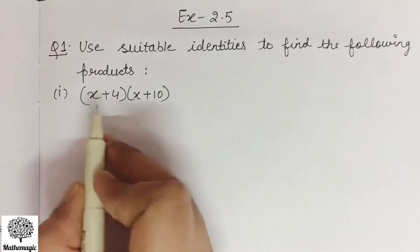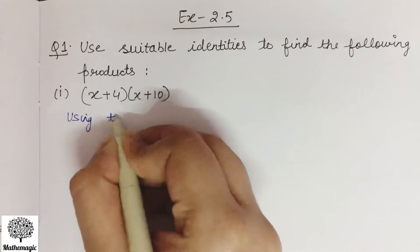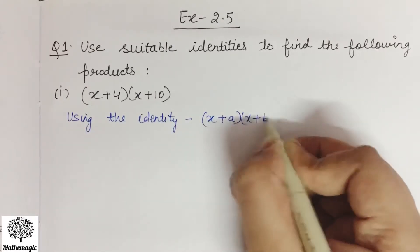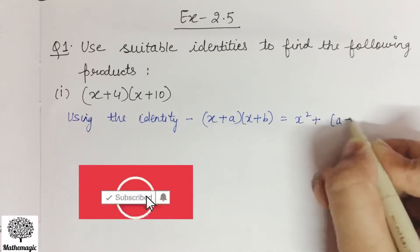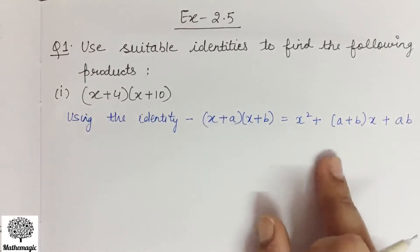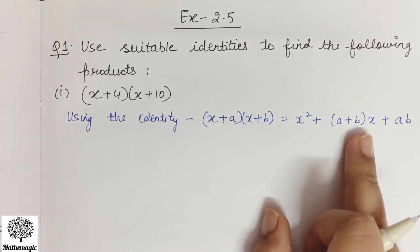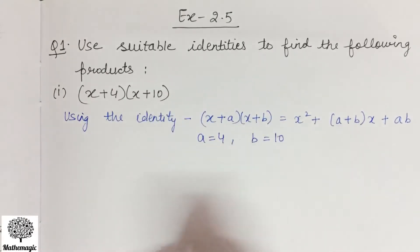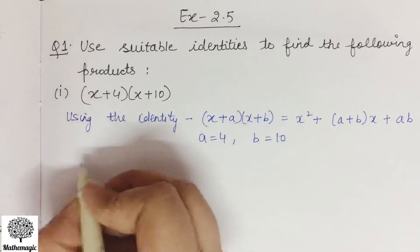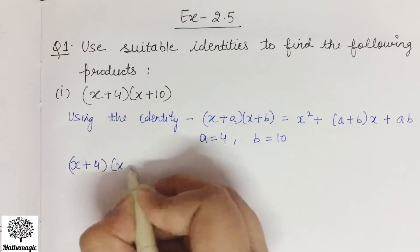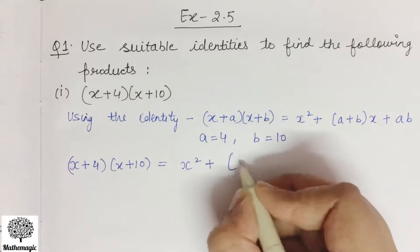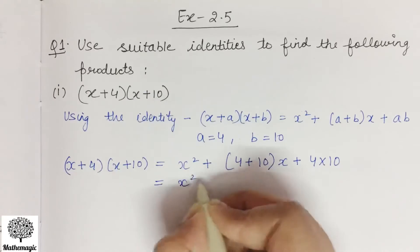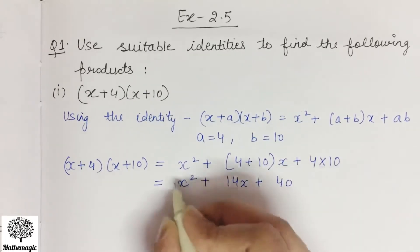For (x+4)(x+10), we will be using the identity (x+a)(x+b) = x² + (a+b)x + ab. It is important to memorize these identities because we need to use them quickly. Here a is 4 and b is 10. Substituting: (x+4)(x+10) = x² + (4+10)x + 4×10 = x² + 14x + 40. This is the required product for the first part.